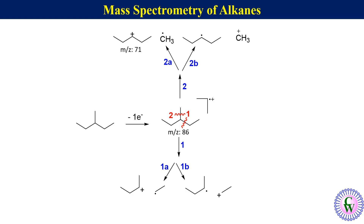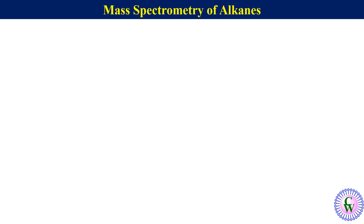We can see that paths 1a and 2a both give a secondary carbocation, so these two paths will be preferred over 1b and 2b. Between 1a and 2a, path 1a results in the expulsion of the larger radical, so 1a will be the most preferred pathway. Thus the height of the peak with m/z 57 will be the highest.